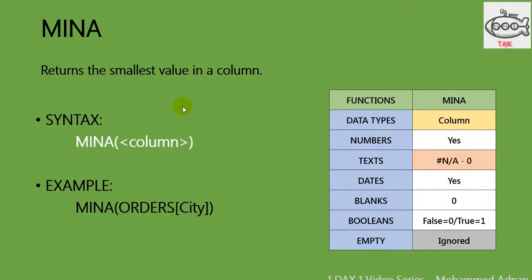Next is MINA. It returns the smallest value in a column. The syntax is simply MINA and the column name. For example: MINA with Orders as the table name and City as the column name. On the right side I have given the function MINA and its data types. Numbers are accepted. For text, it will return zero — it is not accepted in MINA. Dates are accepted. For blank, it will return zero.